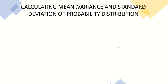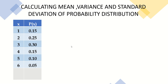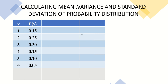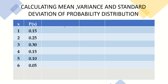Let us now have an example on how to find the mean, variance, and standard deviation of a probability distribution. Let us take the given probability distribution and make a table of values. We are going to add three columns: the first column for x·P(x), the product of x and P(x); the next column for x squared; and the last column for x²·P(x).